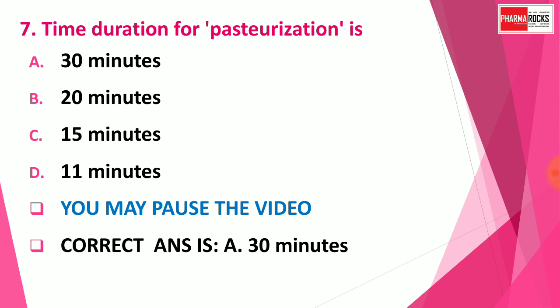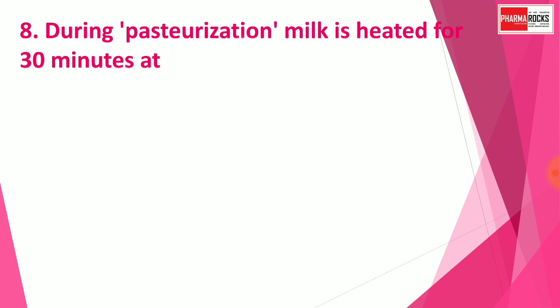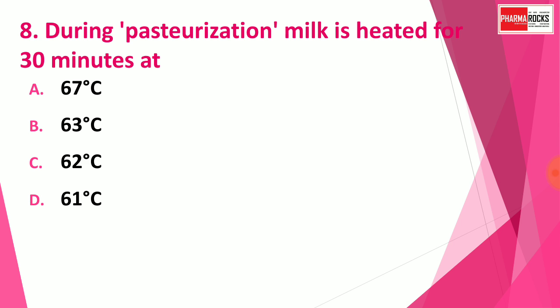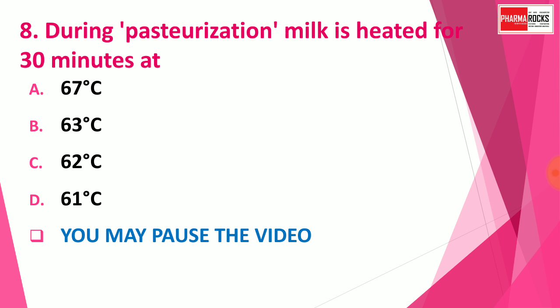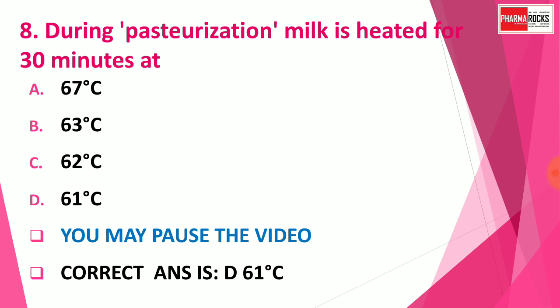Question number 8. During pasteurization, milk is heated for 30 minutes at — Option A: 67°C, Option B: 63°C, Option C: 62°C, and Option D: 61°C. You may pause the video to think about the correct answer. The right answer is 61°C. So at this particular temperature for 30 minutes. Note: if the question asks for a range, then you should select 62 to 72°C.